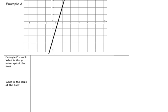Example 2. What is the y-intercept of the line? We'll see where the line crosses the y-axis — that's right here at negative 2. This is called the y-intercept. Remember, that represents the variable b in the slope-intercept form. Next, what is the slope of the line? We are going to label p, r, and q.